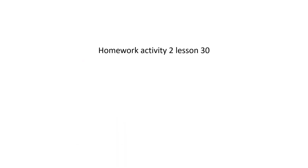For homework you're going to do activity two in lesson 30. I have the teacher book so my page numbers aren't the same as yours — just find activity two on lesson 30. There are four problems, and remember on all four you're going to find the equation of both lines. While the book says to write it in standard form, you're going to write it in point-slope form.